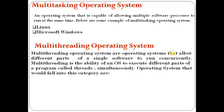Linux is a multi-tasking operating system. A multi-threading operating system allows different parts of a single software program to run at runtime. Multi-threading is the ability of an OS to execute different parts of a program simultaneously. Examples of operating systems that support multi-threading include Linux, Windows, and Microsoft — these are all called multi-threading operating systems.